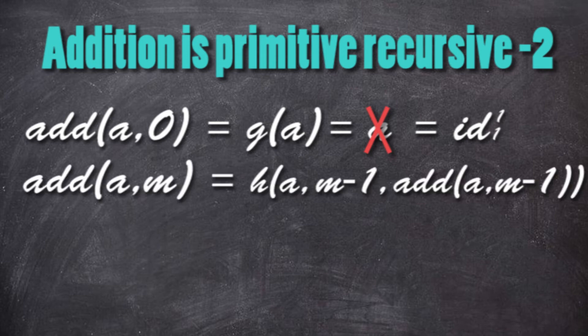The recursion at a state M is a function H that takes all the parameters without the last one, so A, the iterator M, and the recursion at state before, here it's the addition of A and M minus 1.